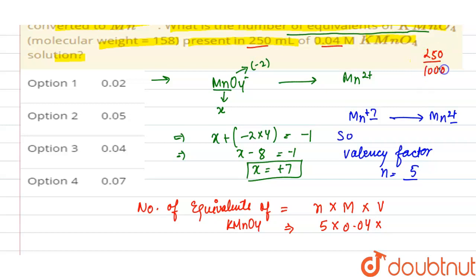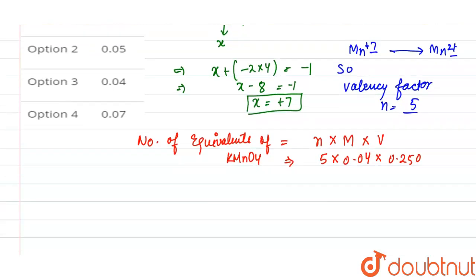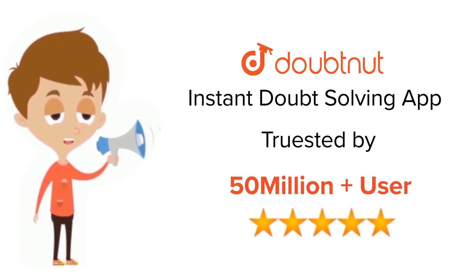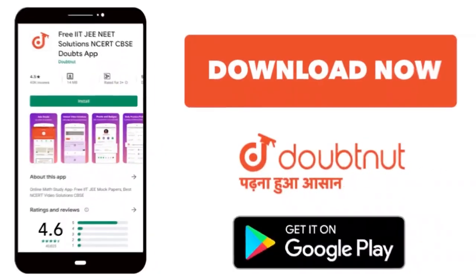it to liters, so it will be 0.250 L. Now the number of equivalents of KMnO₄ comes out to be 0.05. So the correct option is option 2. Thank you. For classes 6-12, IIT-JEE and NEET level, trusted by more than 5 crore students, download DoubtNet app today.